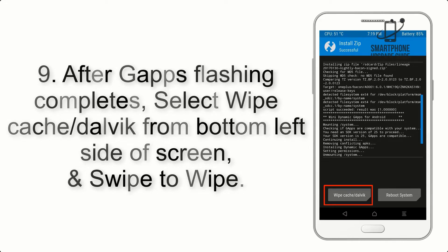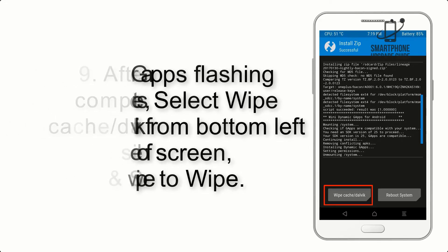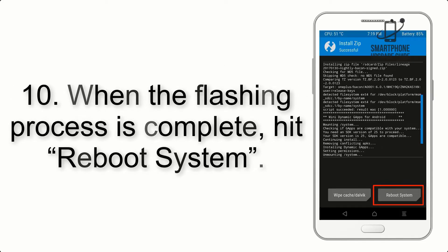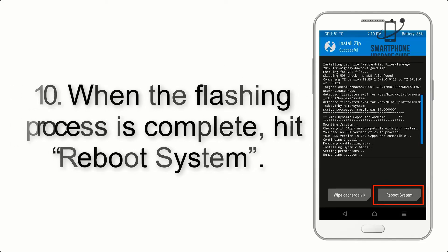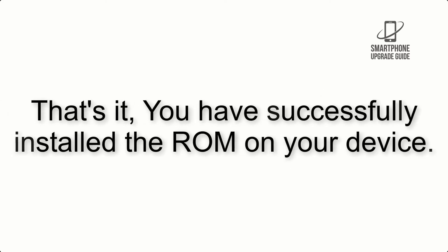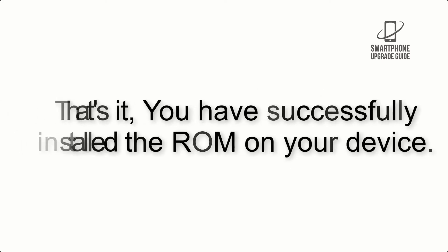Step 8: Flash the GApps zip package in the same manner. Step 9: After GApps flashing completes, select Wipe Cache and Dalvik from the bottom left side of the screen and swipe to wipe. Step 10: When the flashing process is complete, hit Reboot System. That's it — you have successfully installed the ROM on your device.